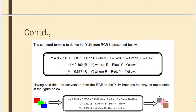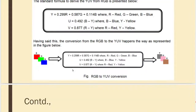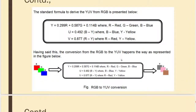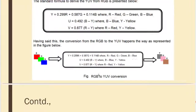A figure would be useful to understand this. When you pass RGB into this formula setup you get YUV, which is derived from the fundamental formula explained earlier. Please remember: YUV is entirely derived from RGB.